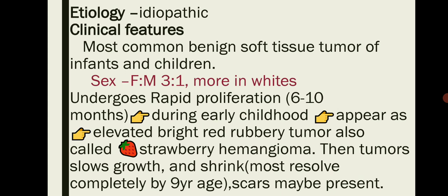Hemangioma is the most common benign soft tissue tumor of infants and children — benign, not malignant, and a soft tissue tumor, not hard tissue. The sex most affected is female, in a three-to-one ratio, and it occurs more in whites.